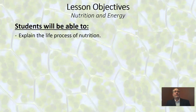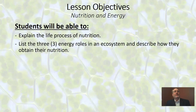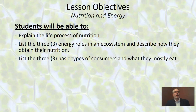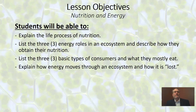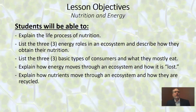By the end of today's lesson, you should be able to explain the life process of nutrition. You need to be able to list the three energy roles in an ecosystem and describe how each organism in that energy role gets its nutrition. You need to list the three basic types of consumers and tell what they mostly eat. You also need to explain how energy moves in an ecosystem and how it is lost, and explain how nutrients move in an ecosystem and how they are recycled.